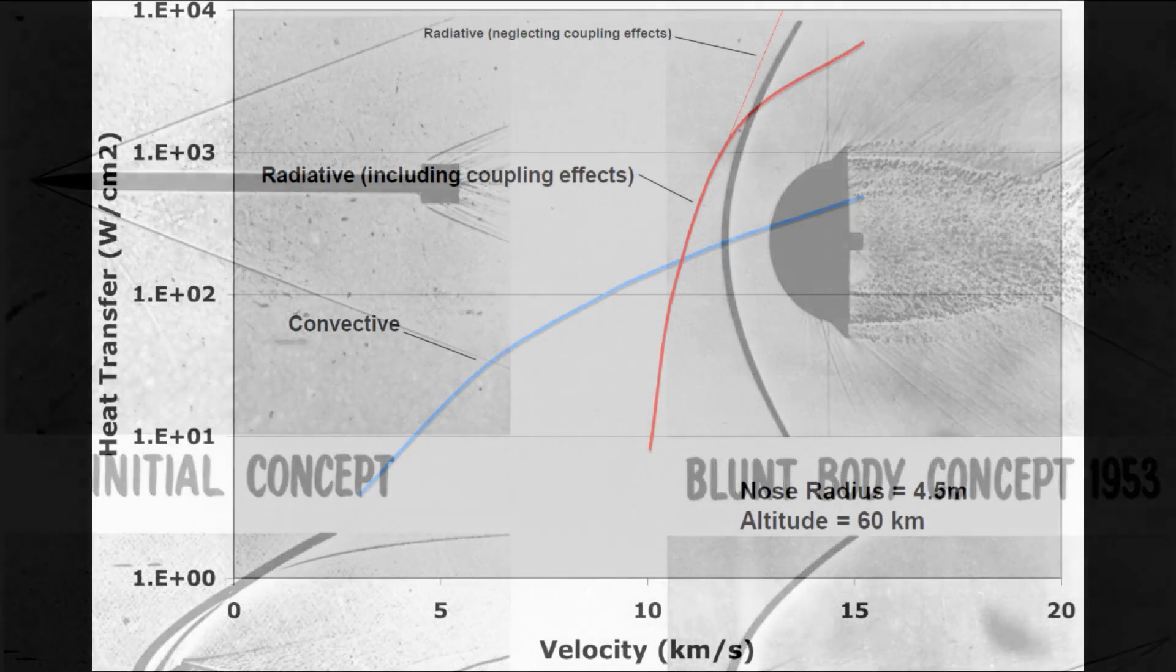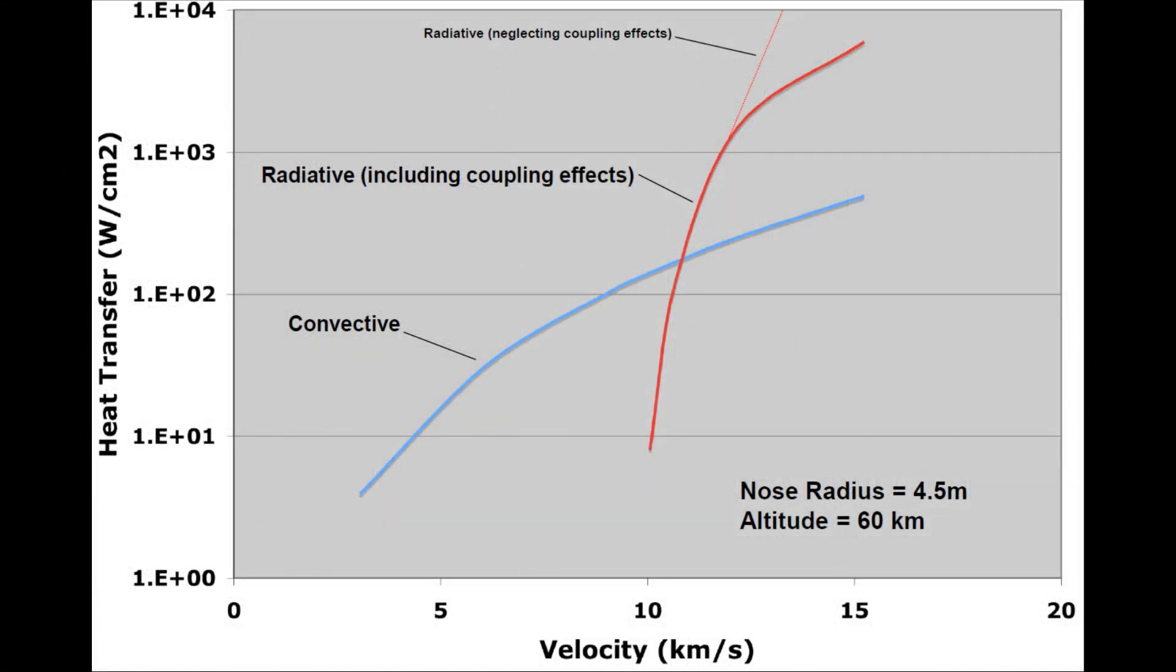As extreme gas temperatures are required for significant radiative heat transfer to occur, radiative heating only becomes a real concern at superorbital speeds. The Apollo missions returning from the Moon entered the Earth's atmosphere at around 11 kilometers per second, significantly higher than the 7 or so kilometers per second required for low Earth orbit. More than 30% of the total capsule heat load was due to radiation.